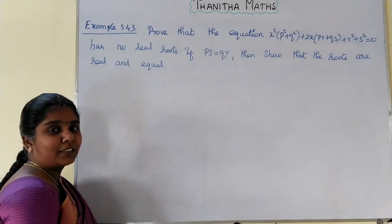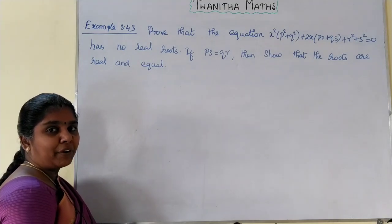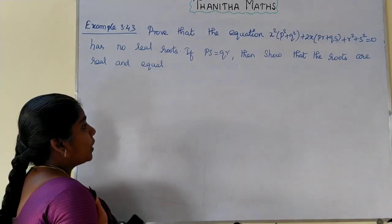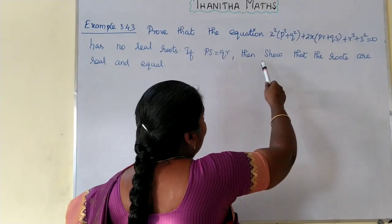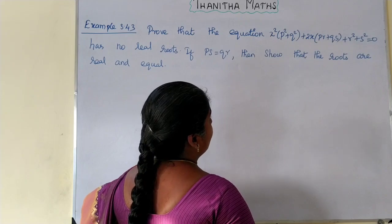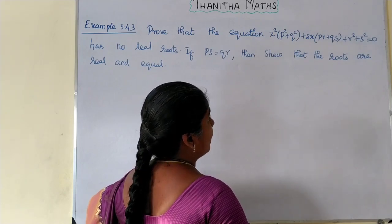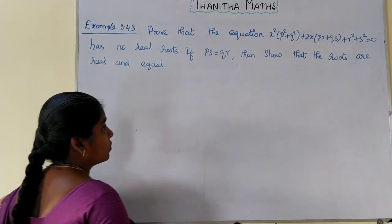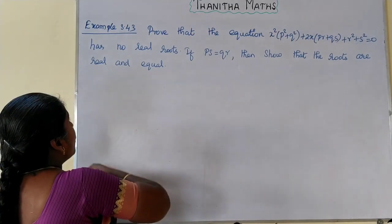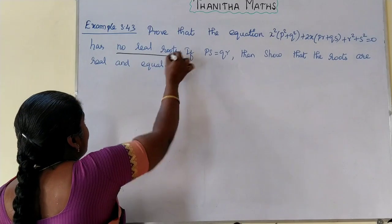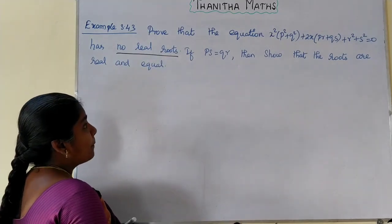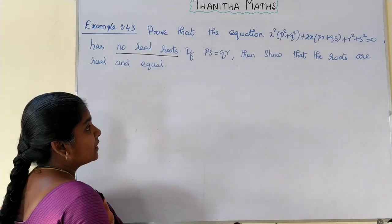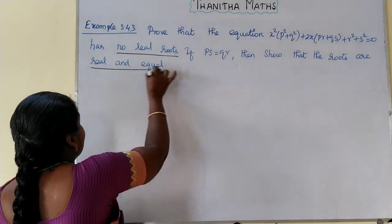Welcome friends. Now you are going to be able to explain example 3.43. Prove that the equation x² (p²+q²) + 2x(pr+qs) + (r²+s²) = 0 has no real roots. And if ps is equal to qr, then show that the roots are real and equal.